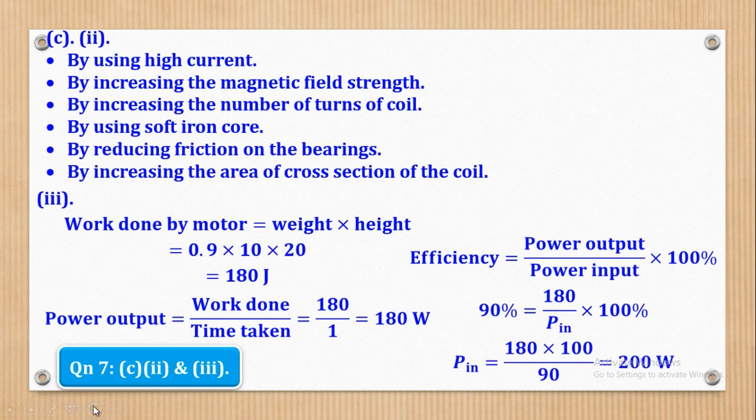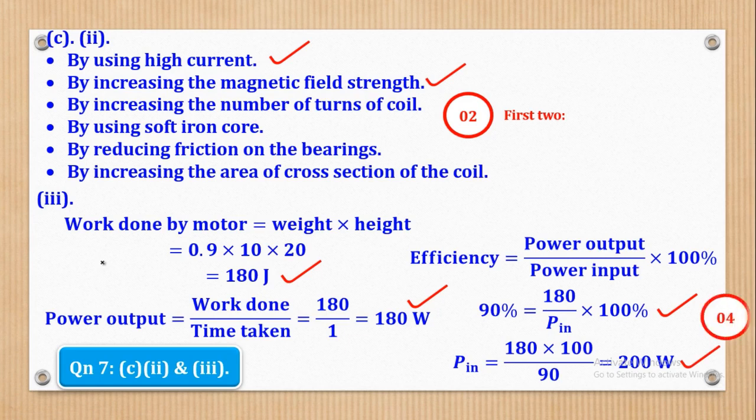So basically, that's what they want. Now let's see how marks can be awarded. So any two of the reasons, it is okay, you get your two marks. Therefore, this one, getting work done by the motor, that is 1 mark. Getting power output is another 1 mark. Right, substituting in the formula for efficiency, that is also 1 mark. And then getting the power input will be another 1 mark. So basically, that's how the 4 marks could be got.